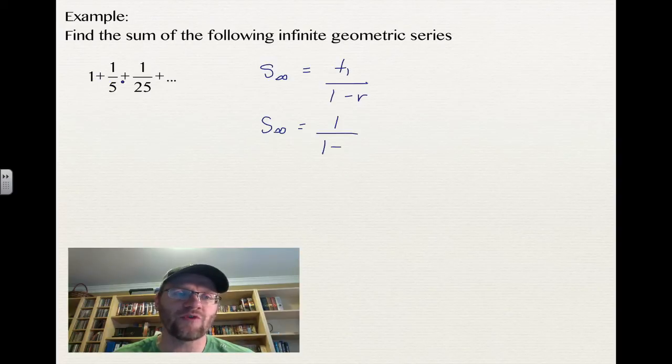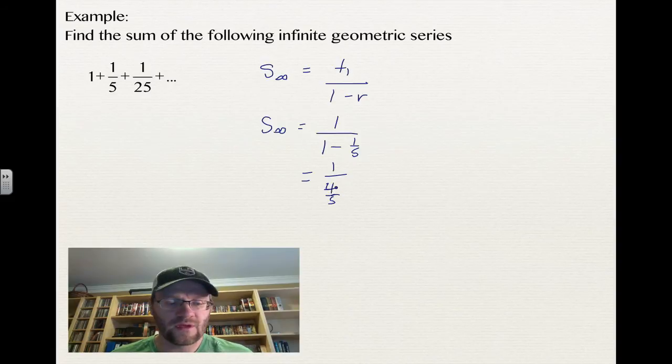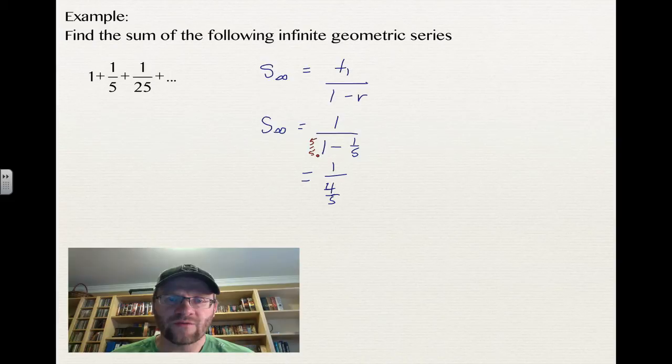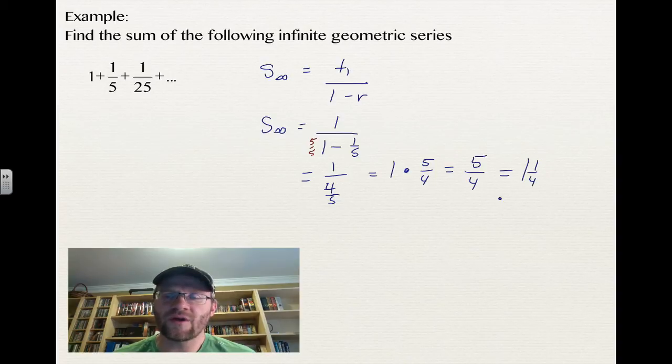Our common ratio is that this thing is being multiplied by 1 fifth every time. When it's all said and done, we get 1 over positive 4 fifths, because this number 1 is written as 5 over 5 when you want to find a common denominator. So now we have 1 multiplied by 5 over 4. So the sum of this series is 1 and 1 quarter, or 5 over 4.